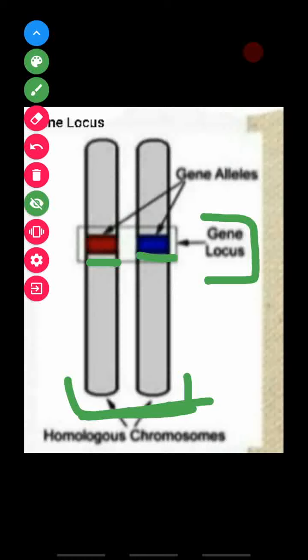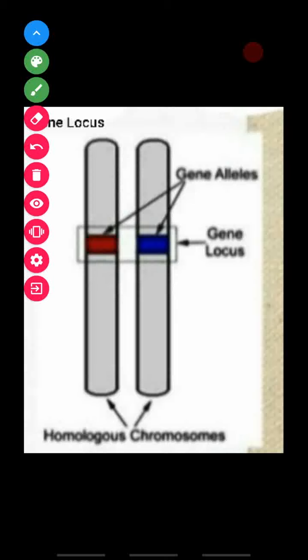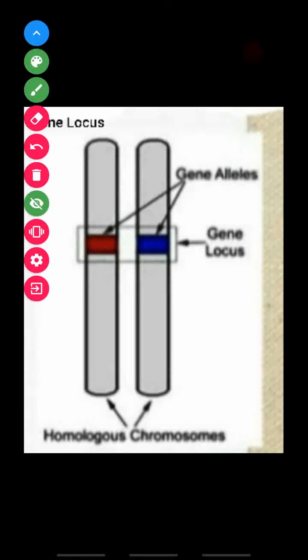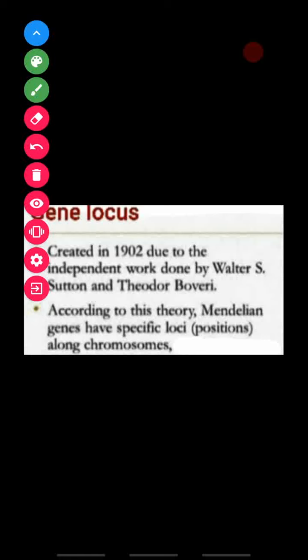So what is gene locus? According to this theory, Mendel's genes occupy a specific locus — that is, they occupy a definite specific position on the chromosome. This specific position is what we call the gene locus.